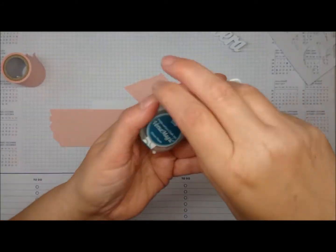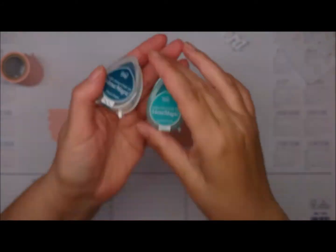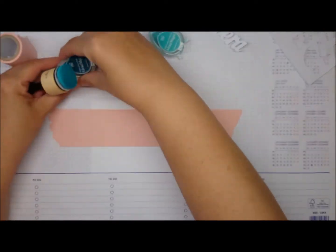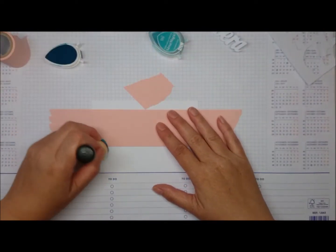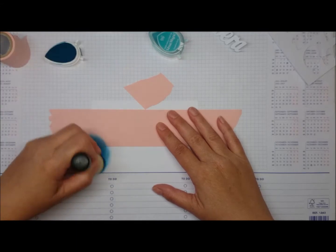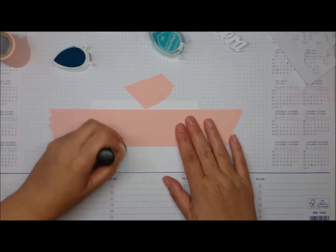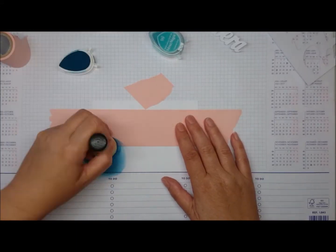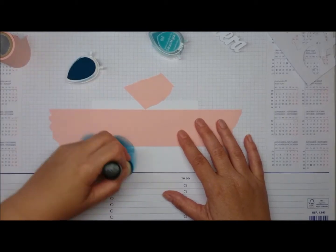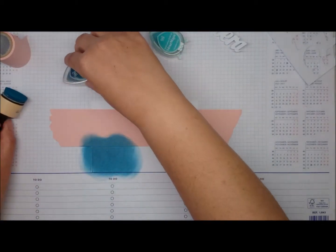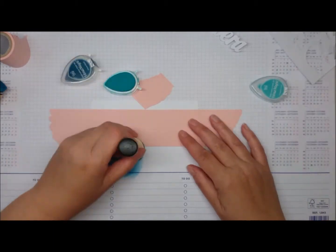Then I tape off my border that I want to ink blend and I'm using Versamagic ocean depth, turquoise gem, and then while I was doing it I wanted a bit of ombre effect so I added aquatic splash in the end as well. For this you can also use distress inks or Memento or any other inks that you like to blend with.